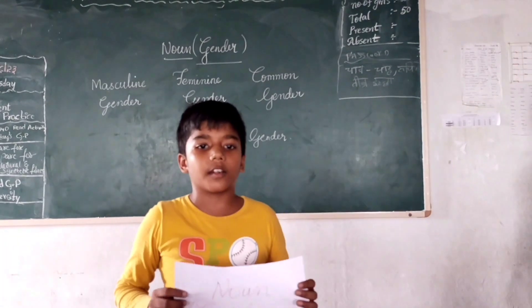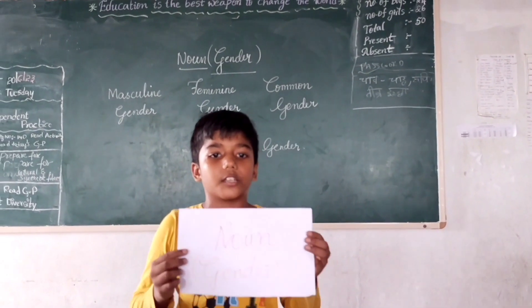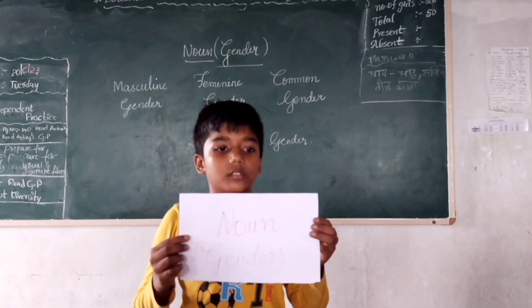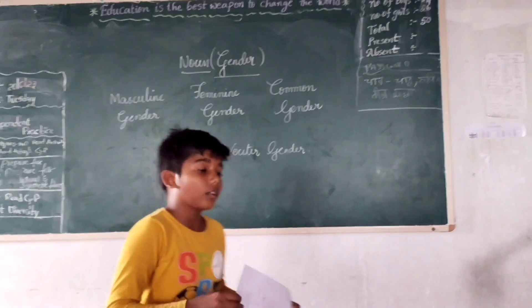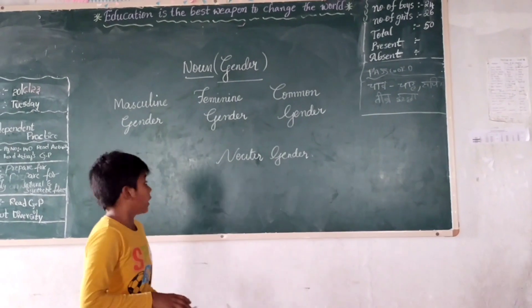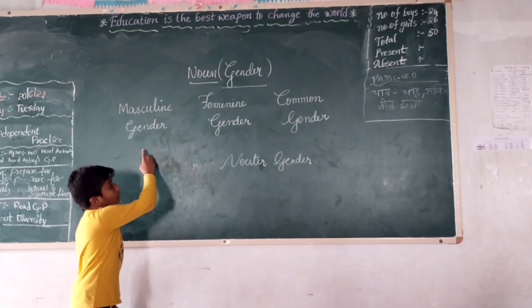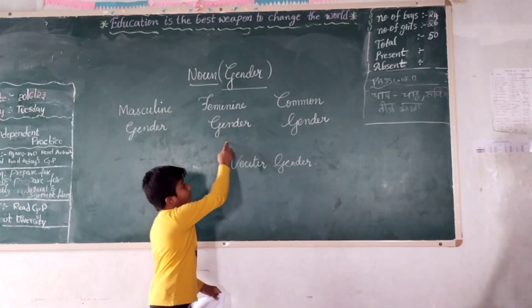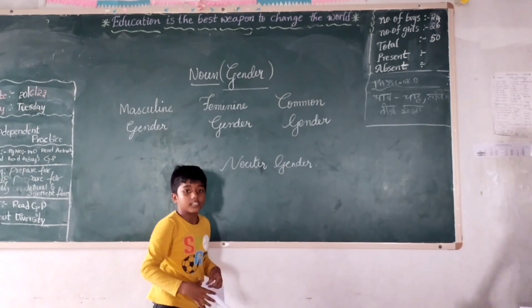Good morning everyone. Now I am going to tell you noun genders. There are four types of genders: masculine genders, feminine genders, common genders, and neuter genders.